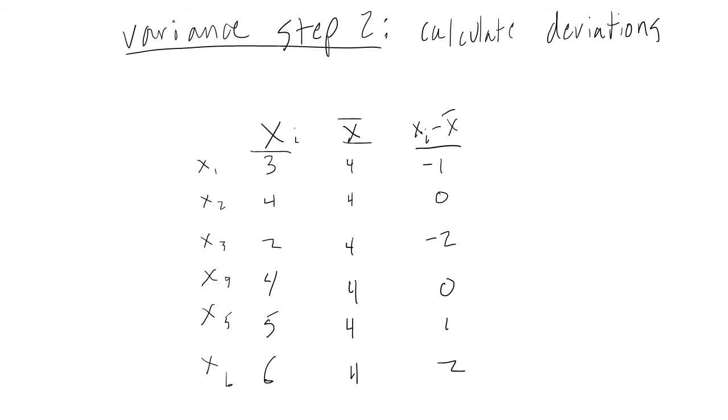The next thing we need to do is get a sense of how much each individual value deviates from the mean. This makes intuitive sense. If we're interested in how values spread out around the mean, it makes sense that we would want to calculate how much each value differs from the mean. Visually, you can think of this as calculating each value's distance from the mean.